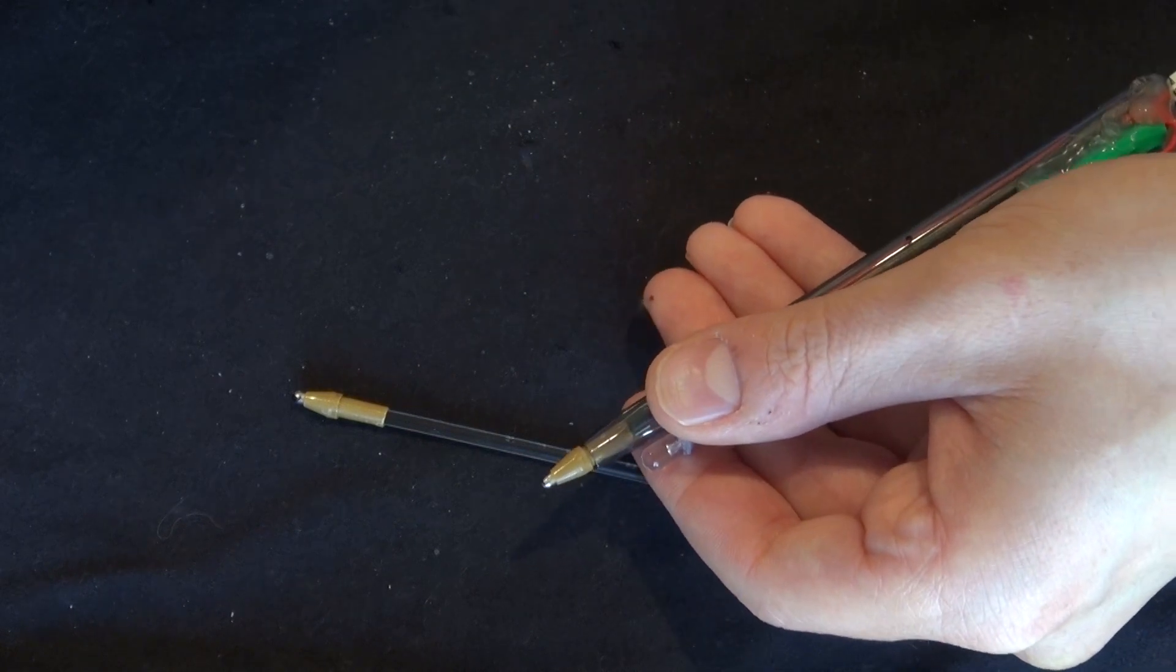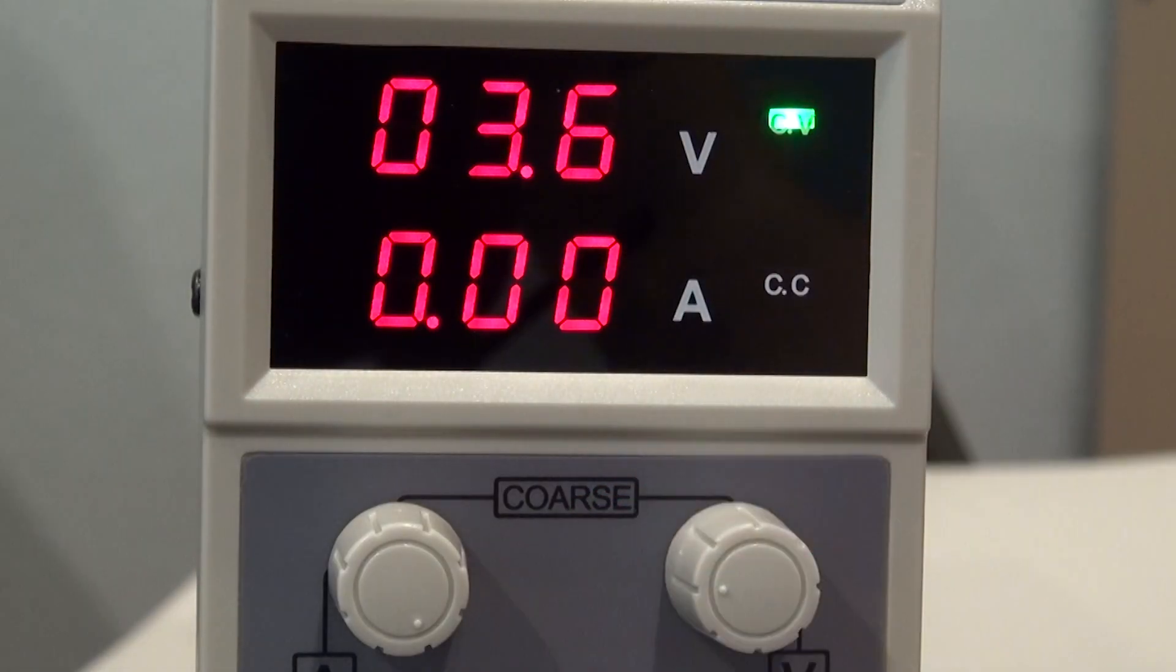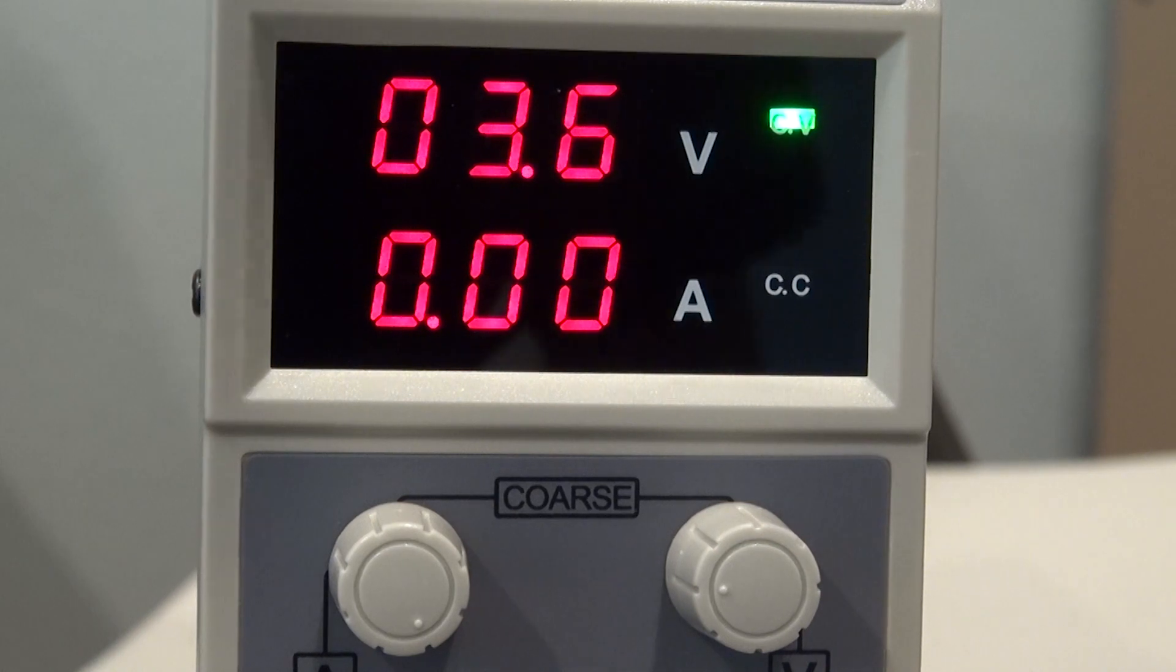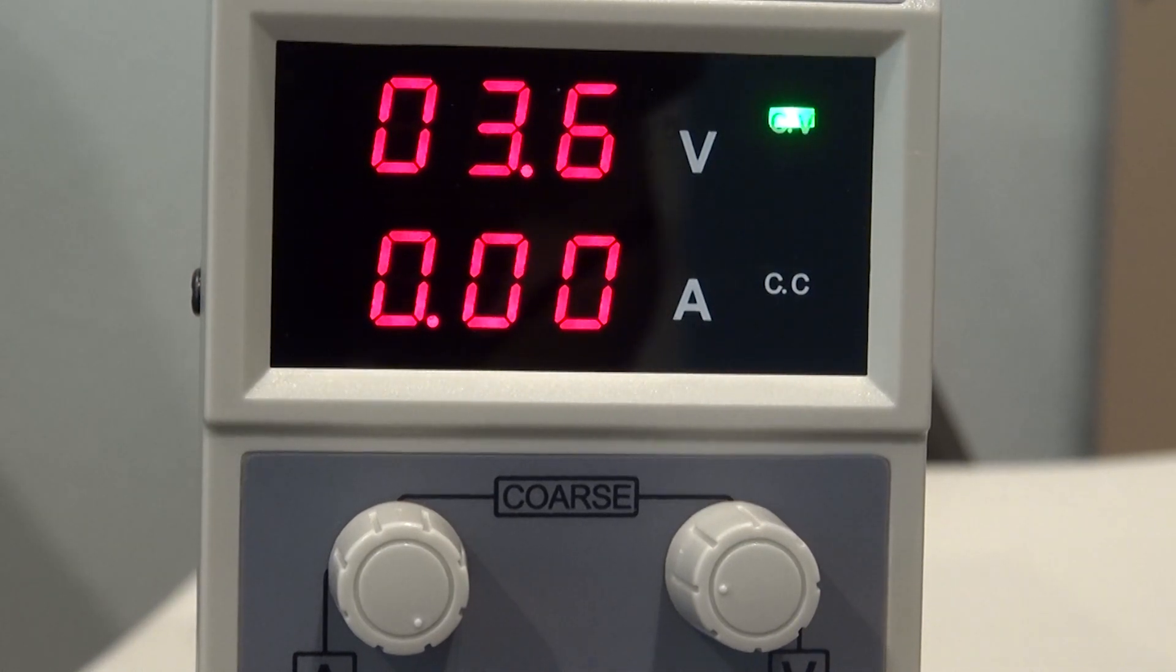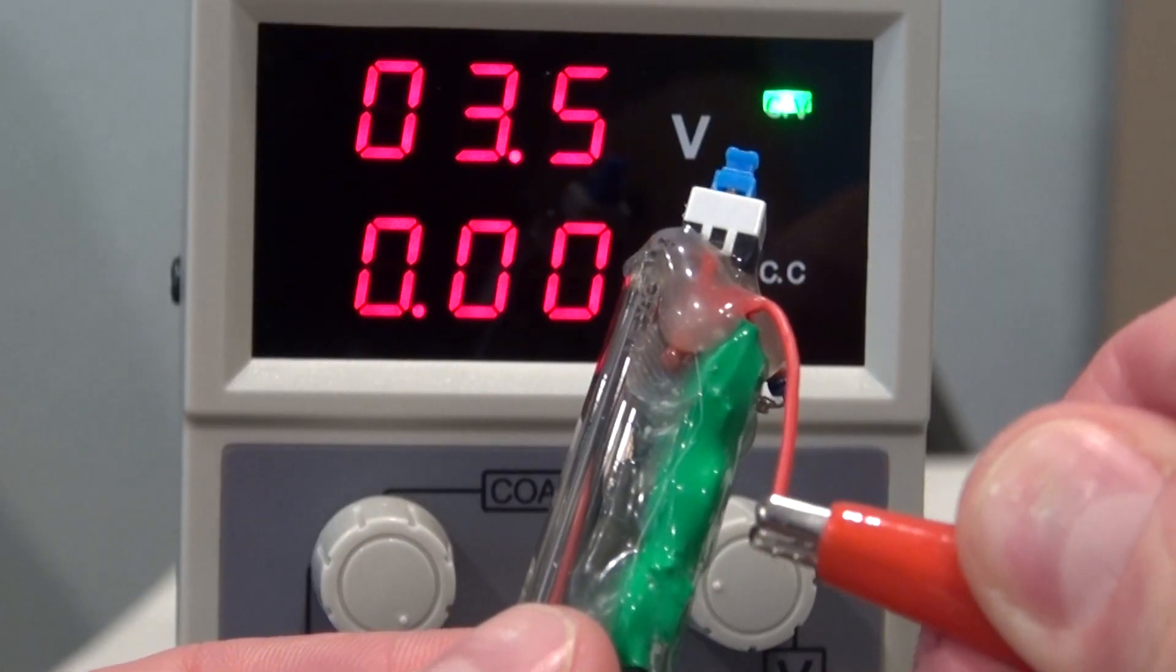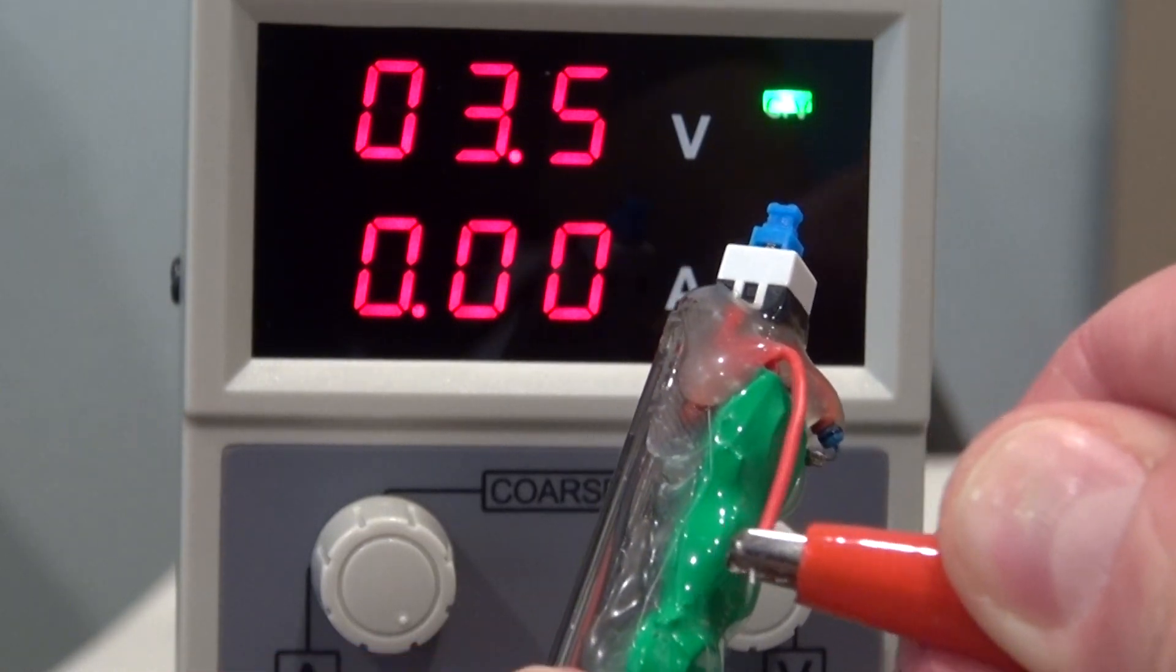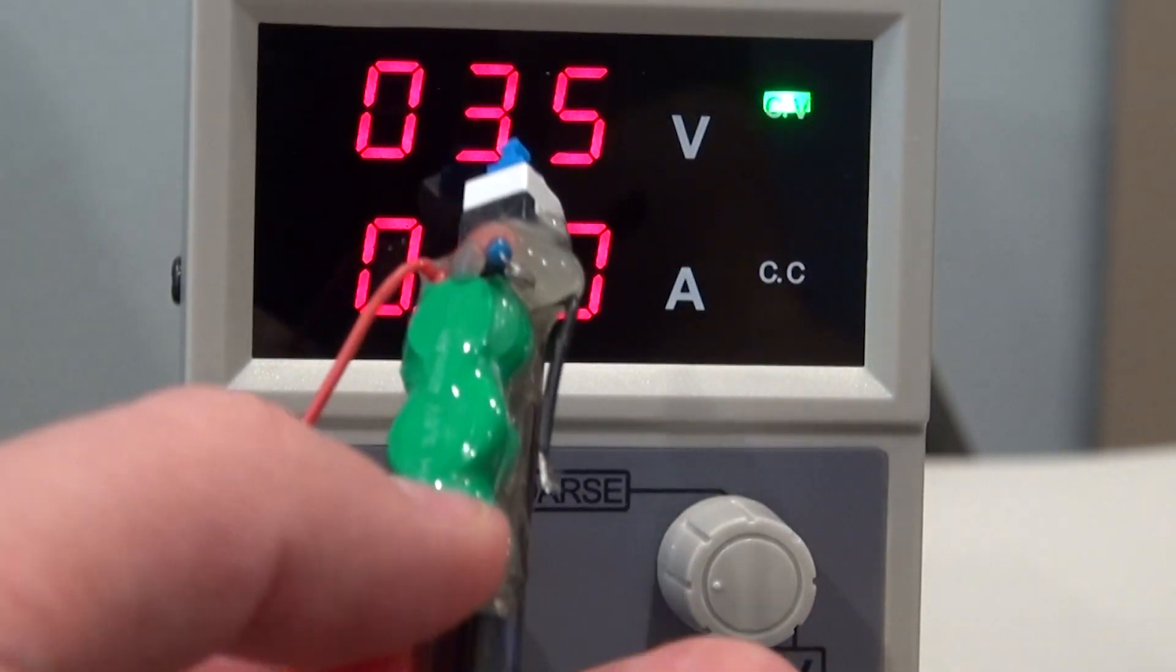To recharge it, go to your lab bench power supply and turn it up to 3.6 volts. Attach the positive wire to the positive and attach the negative wire to the negative.